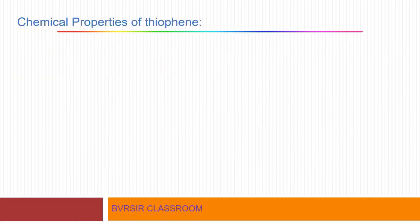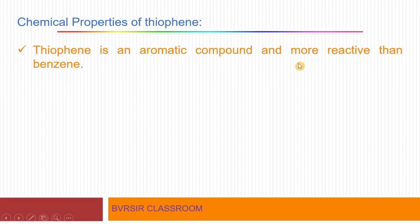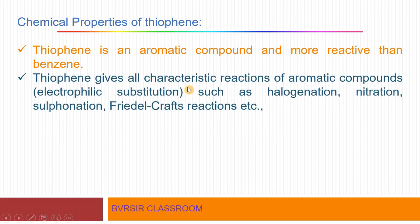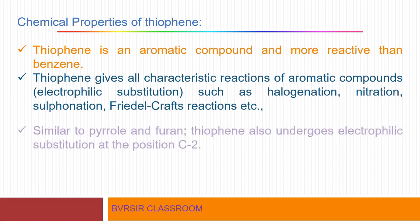Now let us discuss the chemical properties or chemical reactivity of thiophene. The reactions of thiophene are similar to those of pyrrole and furan which we discussed previously. Thiophene is an aromatic compound and more reactive than benzene. Being aromatic, it exhibits electrophilic substitution reactions — including halogenation, nitration, and sulfonation.